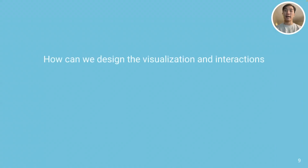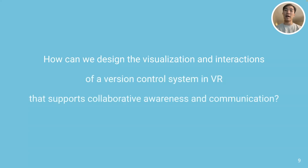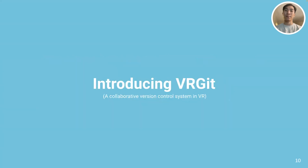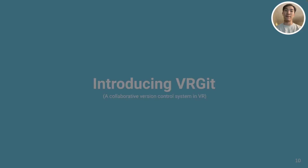Therefore, in our work, we investigate how we can design the visualization and interactions of a version control system in VR that supports collaborative awareness and communication. Without further ado, let me introduce VRGit, a collaborative version control system in VR.